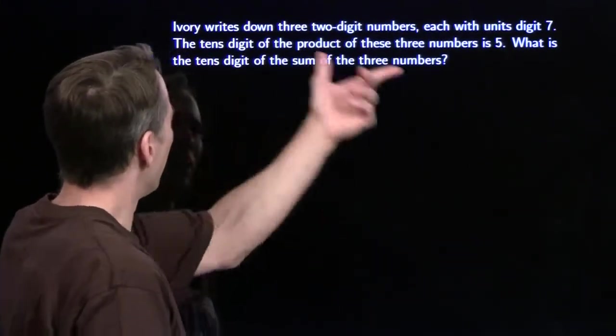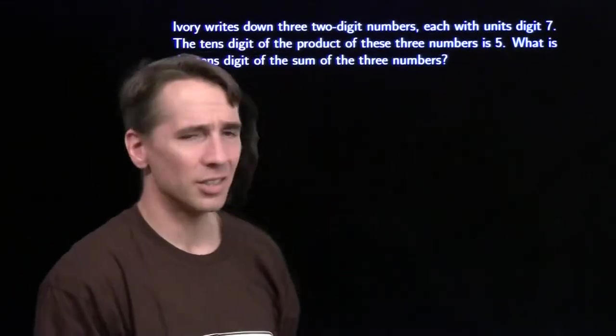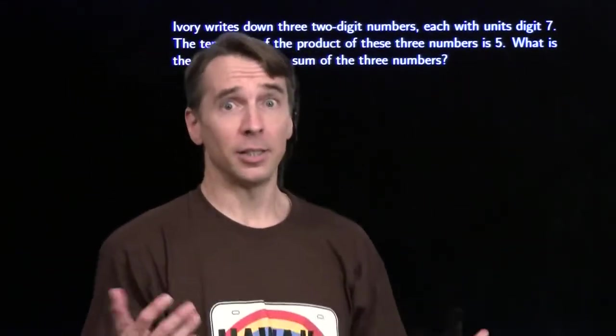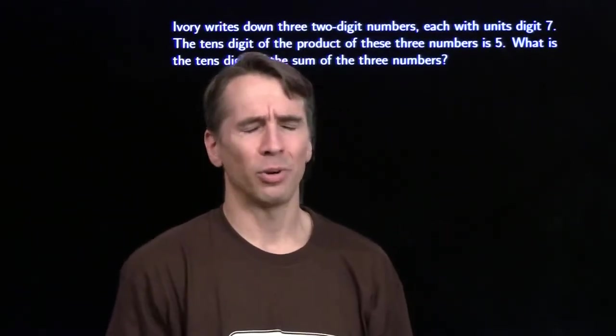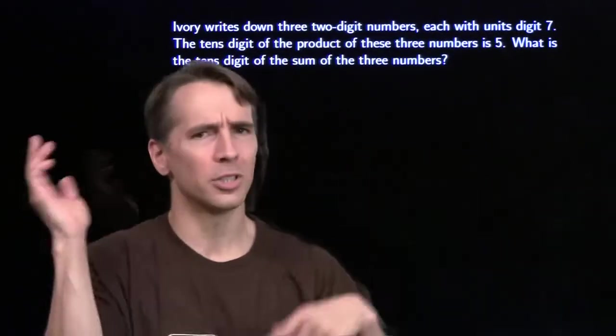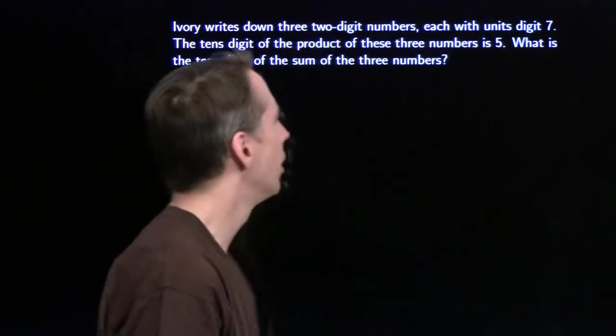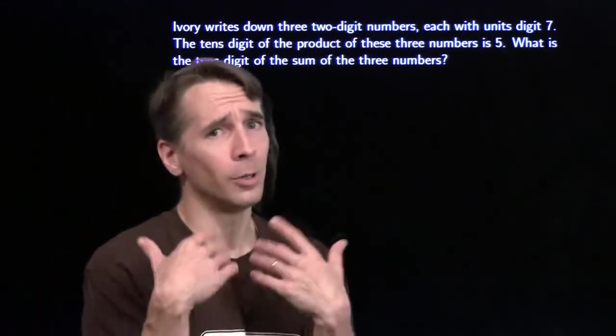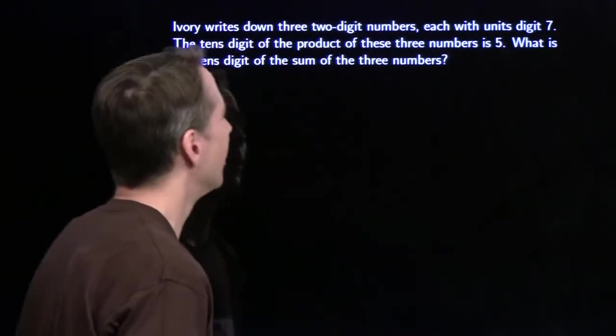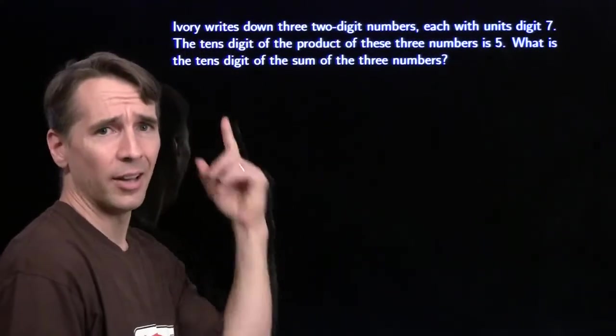We could try some trial and error. Pick three two digit numbers that end in seven, multiply them together. See if we get lucky. If we don't, then maybe adjust and multiply. That's right. I don't want to do that. I don't want to multiply a bunch of two digit numbers over and over and over again. I'll be here forever. Now, I don't see the slick solution. If you do, give me a shot. I'd love to hear it. But I'm going to break out the algebra.